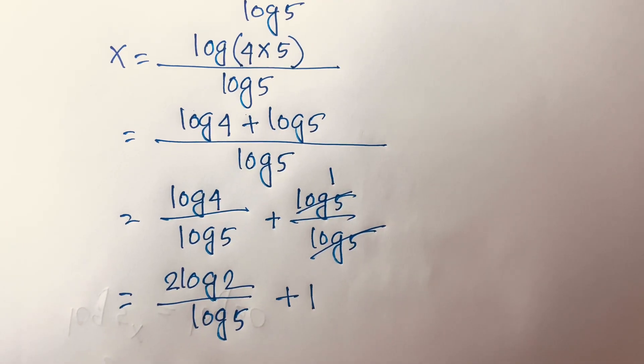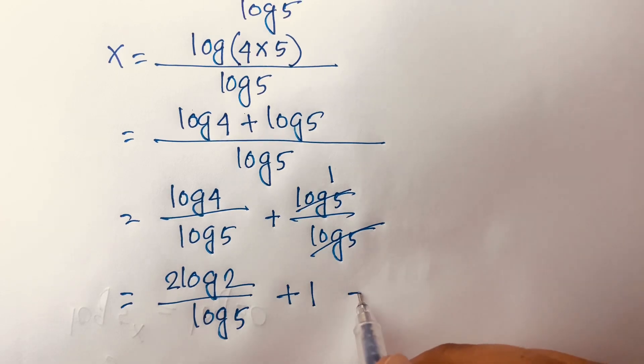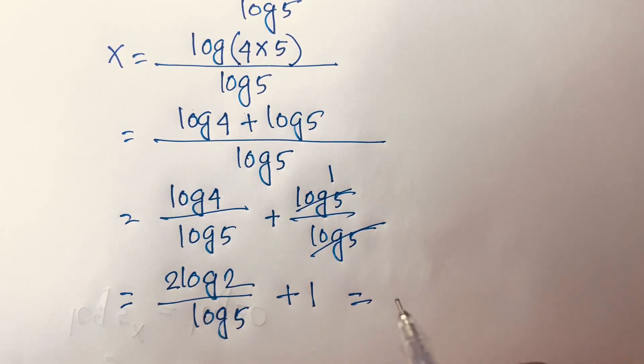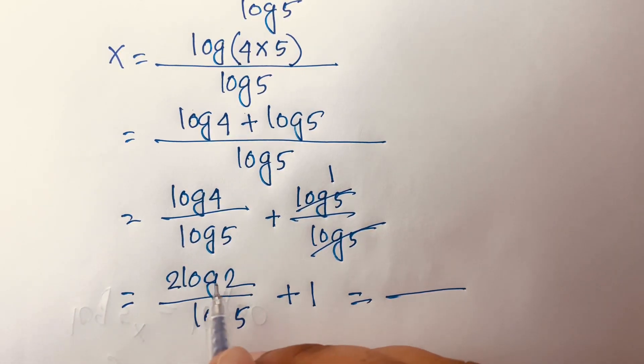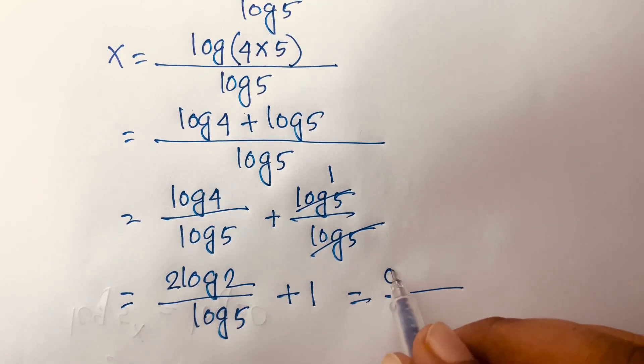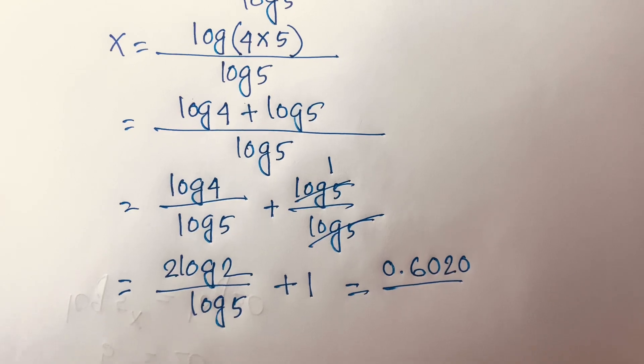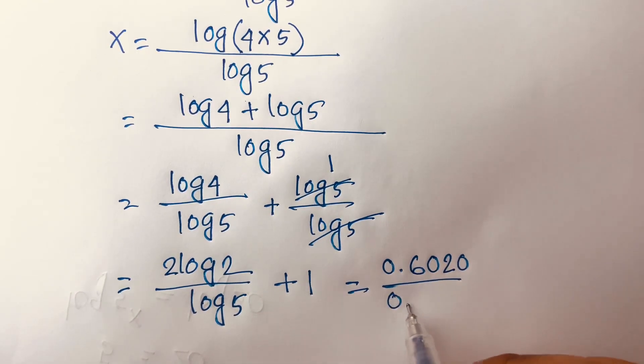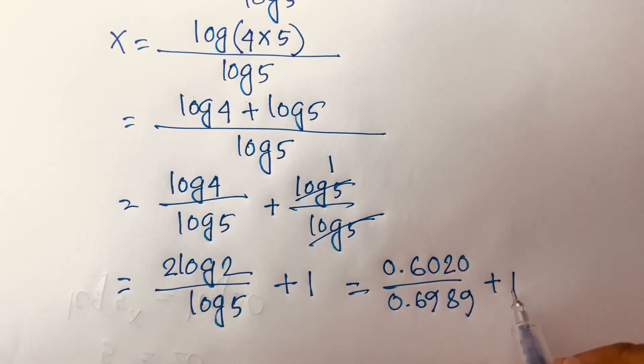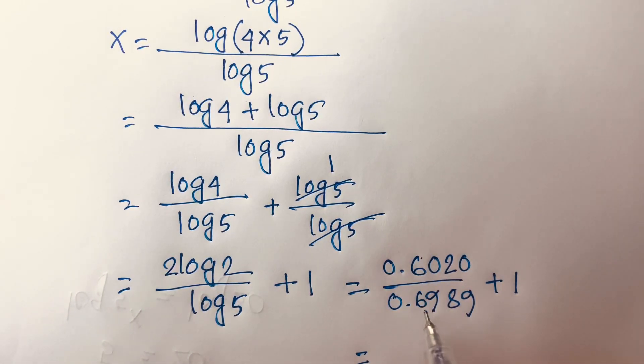Then if I use calculator, this time we'll find out this term value is, here is 2×log2, it will be 0.6020, and log5 it will be 0.6989, and here is plus 1.